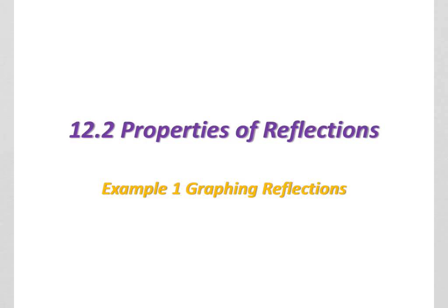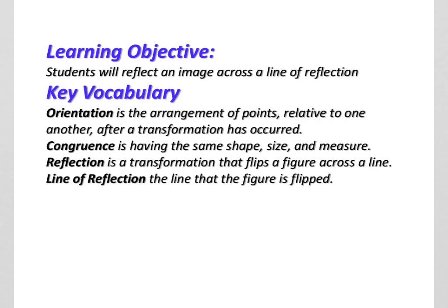So here we're focusing on 12.2 in Unified. The learning objective is you reflect an image across a line of reflection. The same four vocabularies that I think are very important to your success are knowing what orientation is, congruency, reflection, and line of reflection.